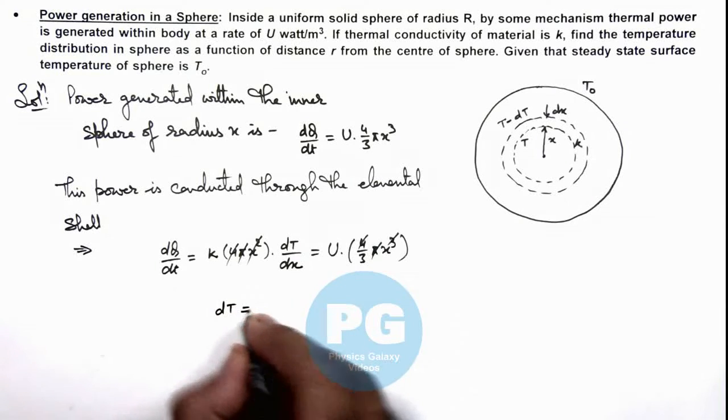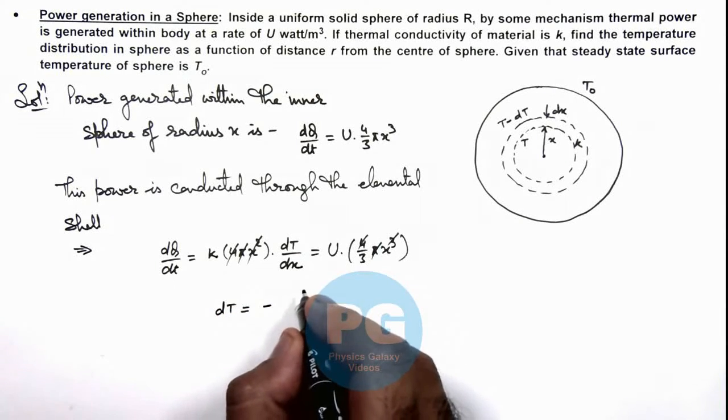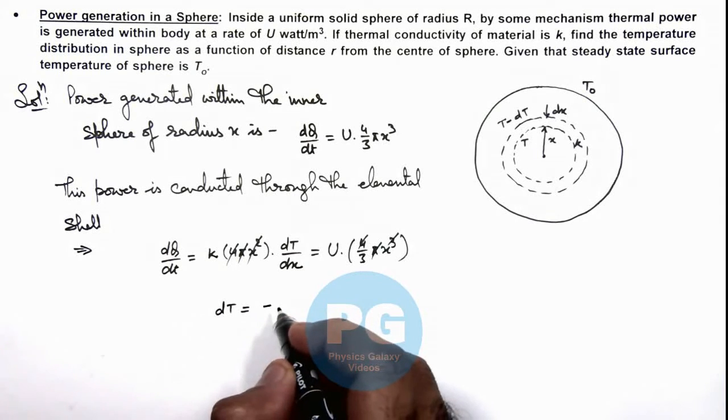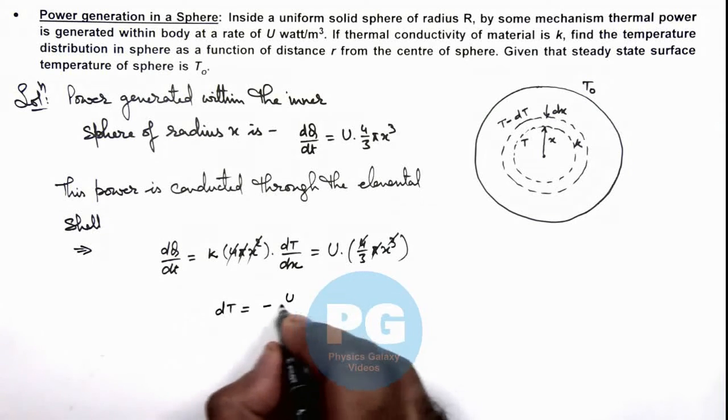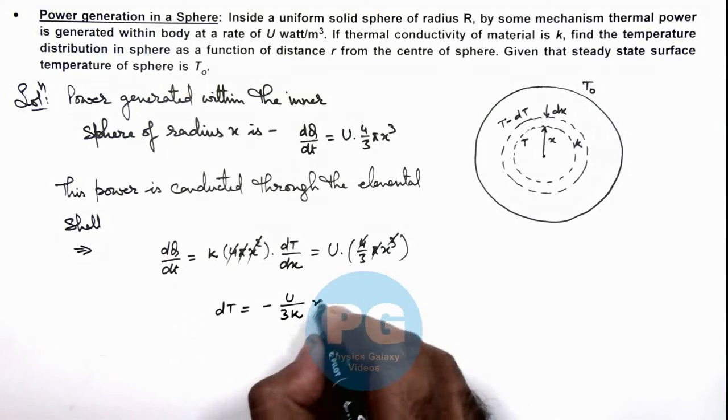for dT is minus—here you can see the value will be k value we can substitute here, so this will be U/3k multiplied by x dx.